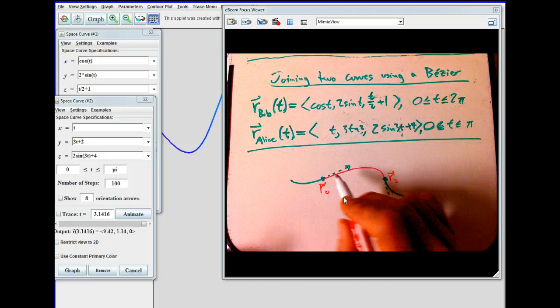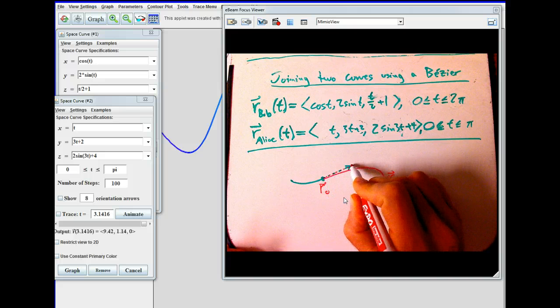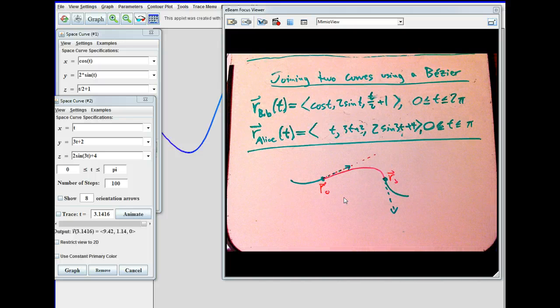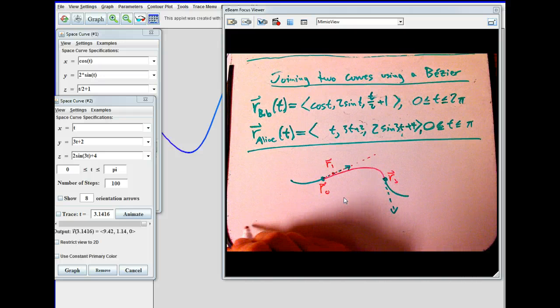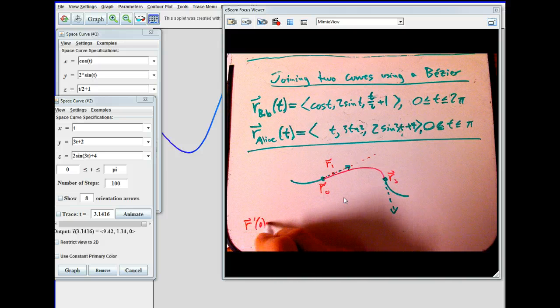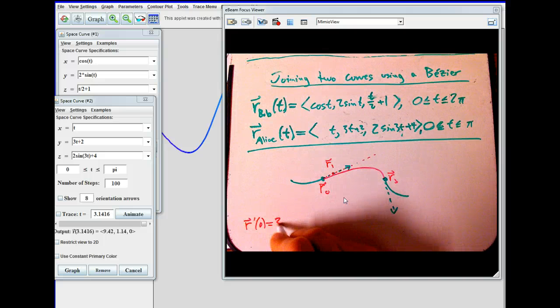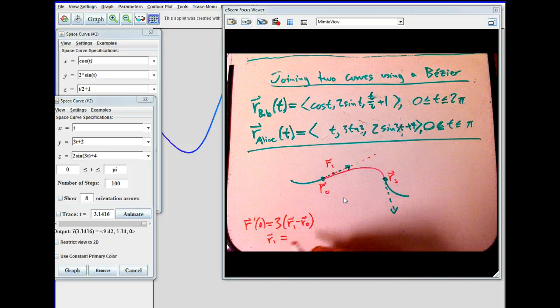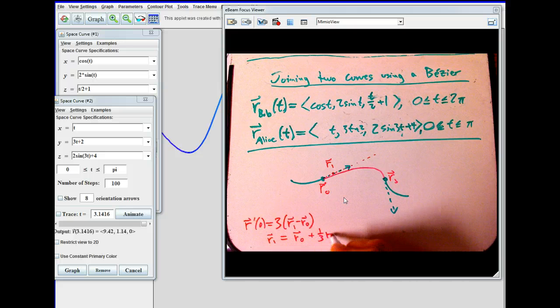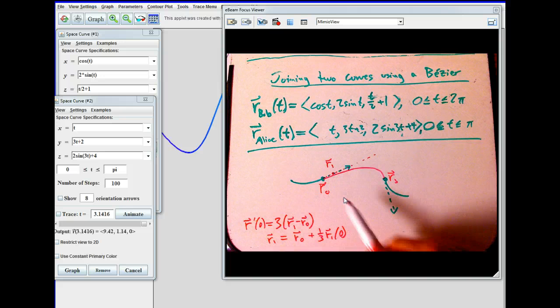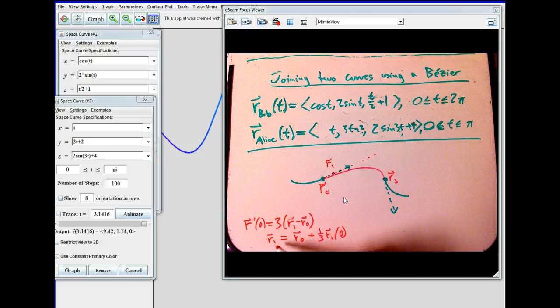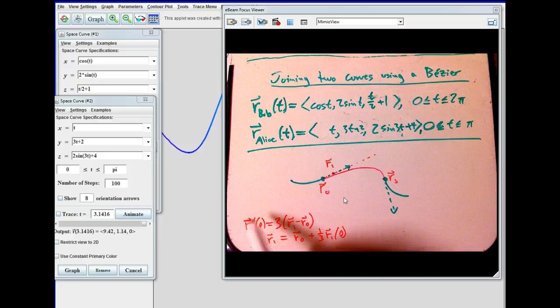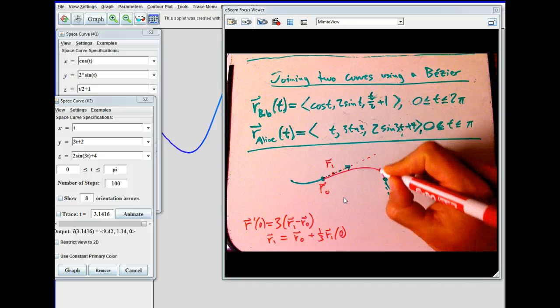And then to get the control points. R1 here controls this direction. What we got is that R prime of 0, the velocity of the Bézier going out of the start, was three times R1 minus R0, the separation vector. And so if you solve that for the mystery R1, it's R0 plus one third of that velocity vector. And that velocity vector we can get as the last velocity vector for Bob.